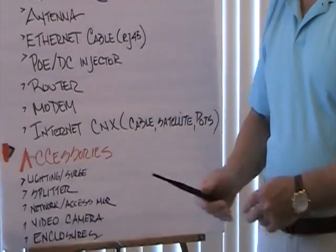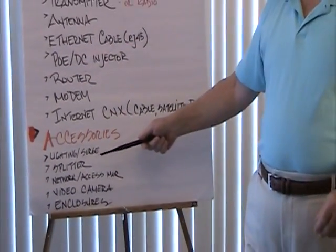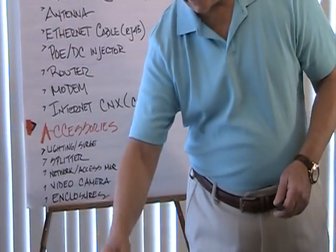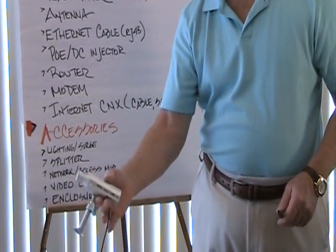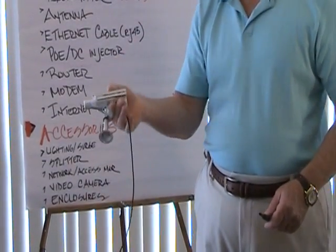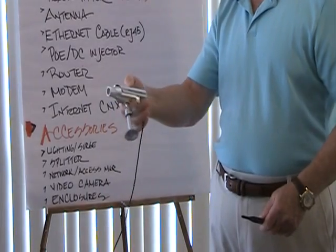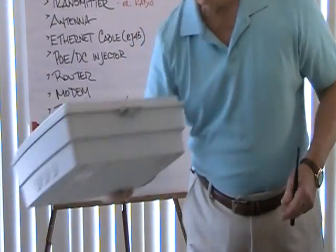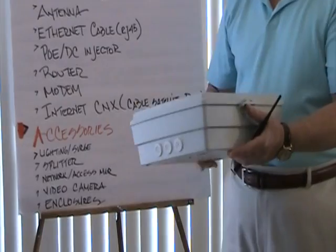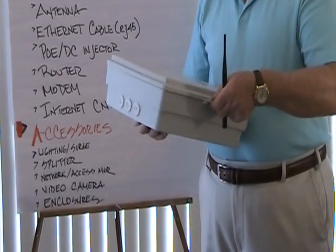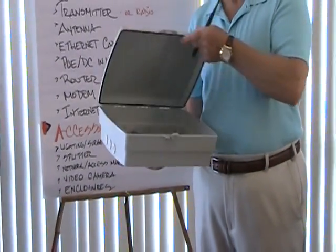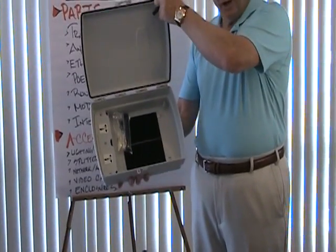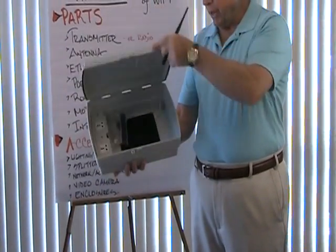We have other network accessories: a network access manager, which we'll look at later; a video camera, which may look very much like this — this happens to be a small bullet camera. Another option would be an enclosure to protect your equipment — in most cases the PoE injector — from the weather, from water, from dust. This is what that would look like.